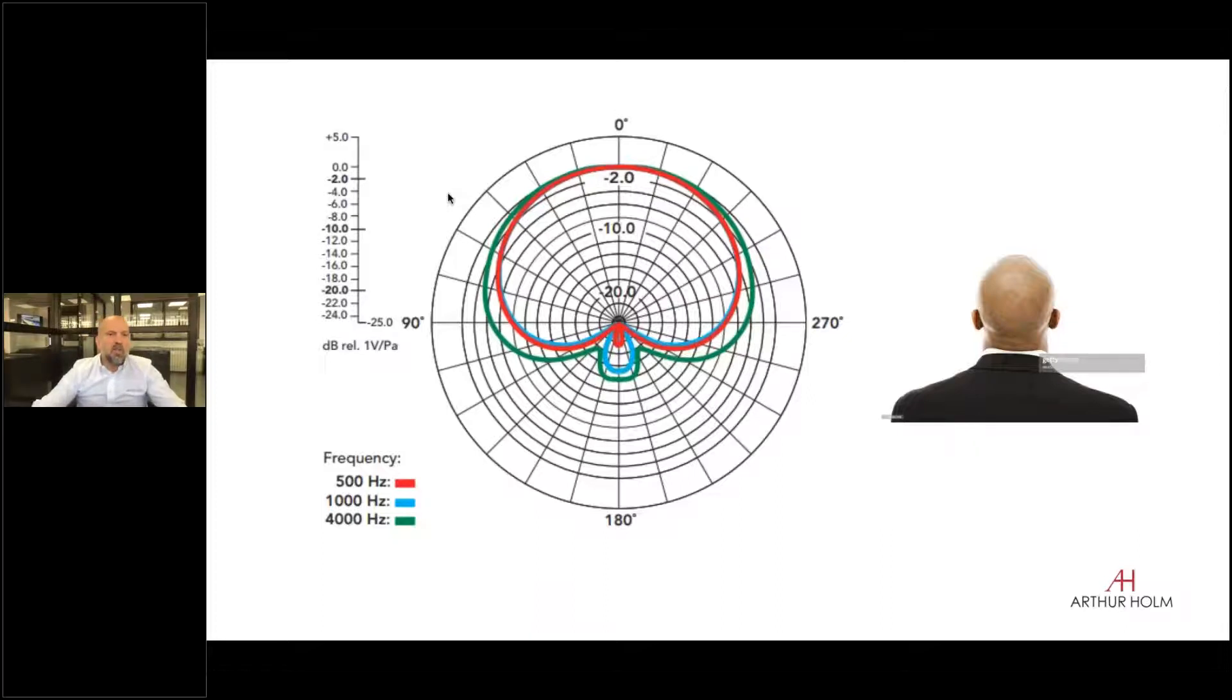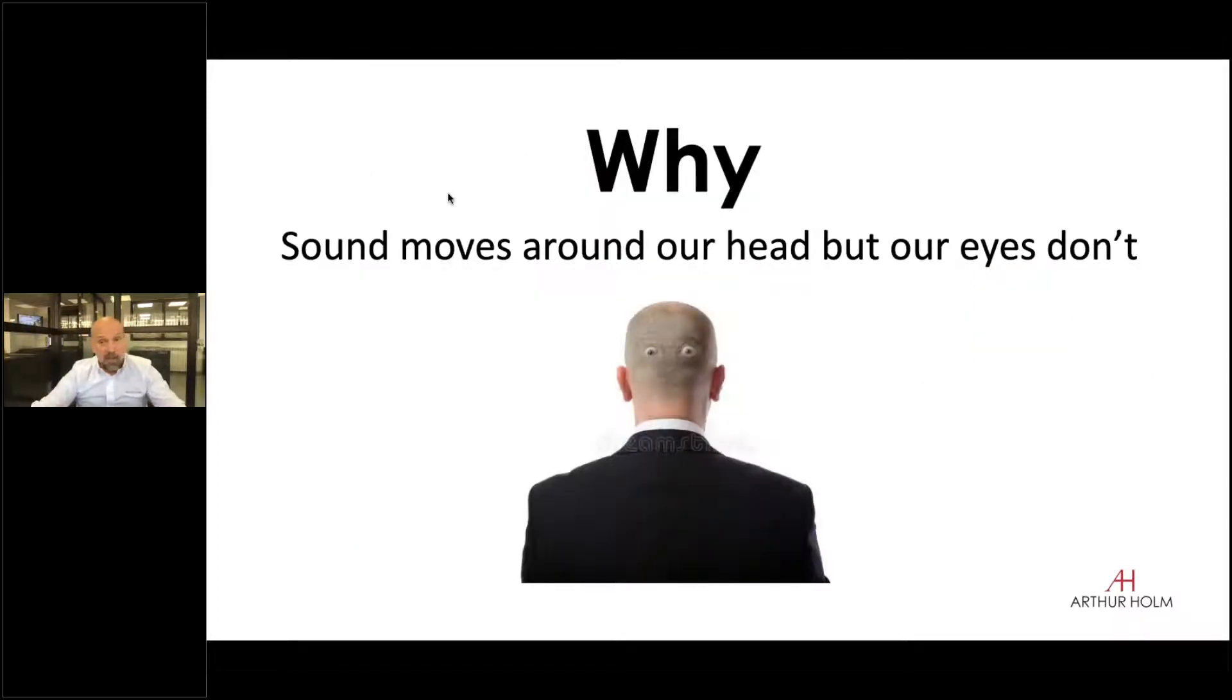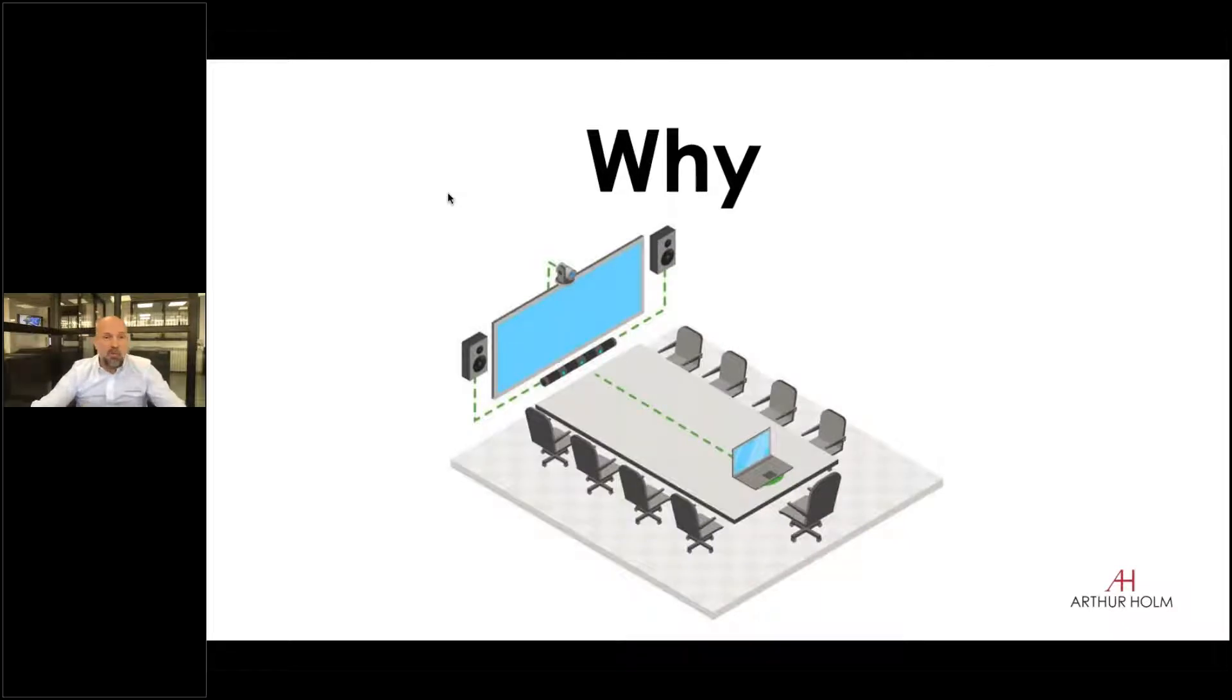Very simple, just to understand speech intelligibility, we need to look at each other. If we look at how our ears' polar pattern is, we are picking up in front of us. Of course we can also hear what's going on in the back, but it's not loud and clear and especially not in the speech area. And the sound moves around. One thing for sure is that our eyes don't move around. Our eyes are fixed. We don't have the capability of looking what is going on behind us.